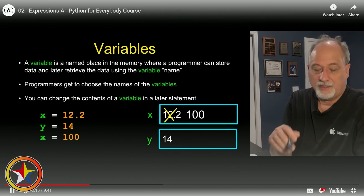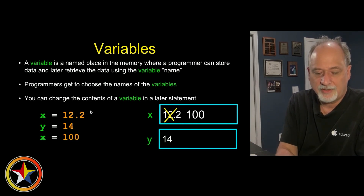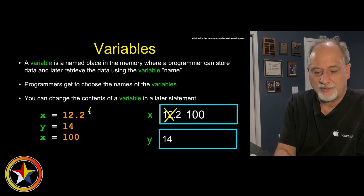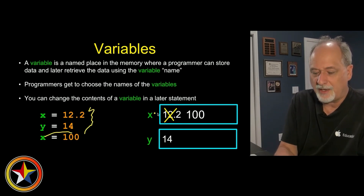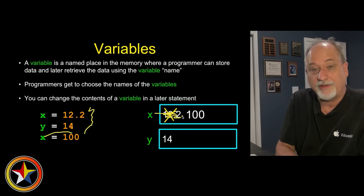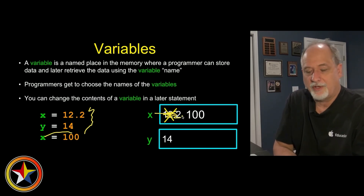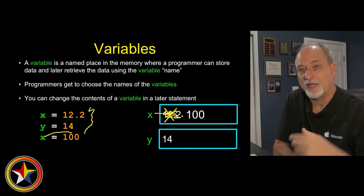These variables hold one value, so if a third statement executes saying put 100 into x, that wipes out the old value of 12.2 and replaces it with 100. That's another reason we call them variable - because they vary.